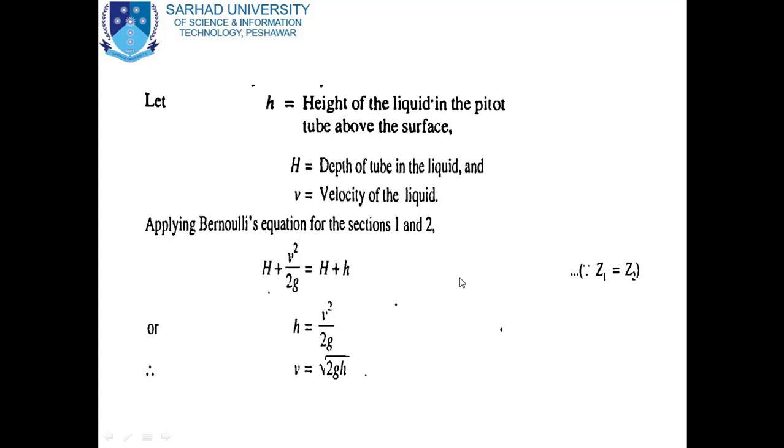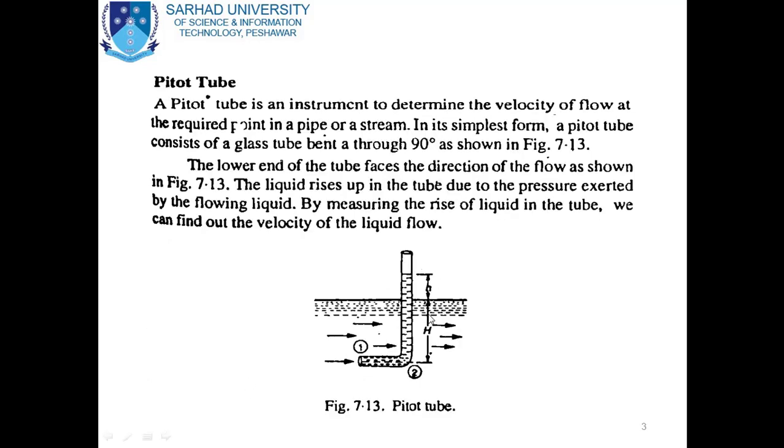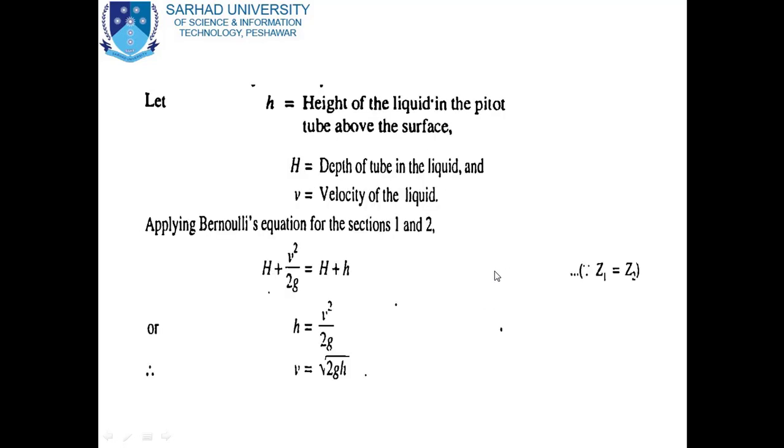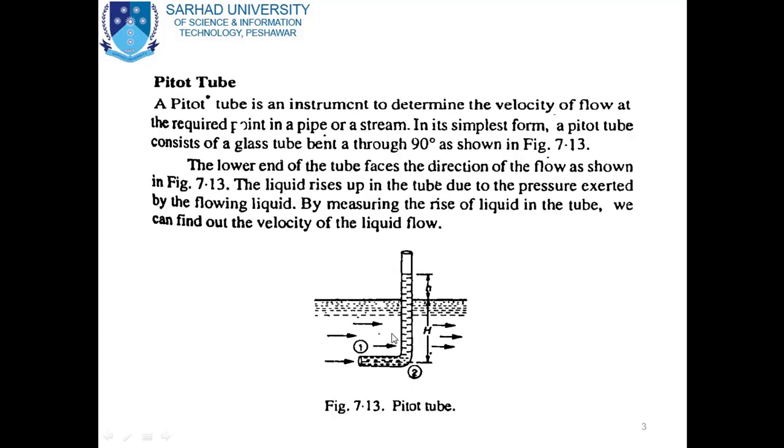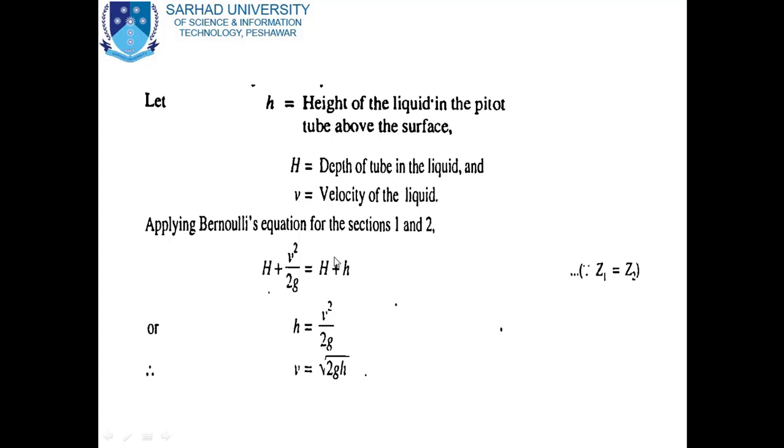Now apply Bernoulli's equation for sections 1 and 2. This is section 1, and this is section 2. In section 1, we have h + v²/2g, where the velocity head is v²/2g. In section 2, this equals h + H + h. Capital H cancels out, and we get h = v²/2g.